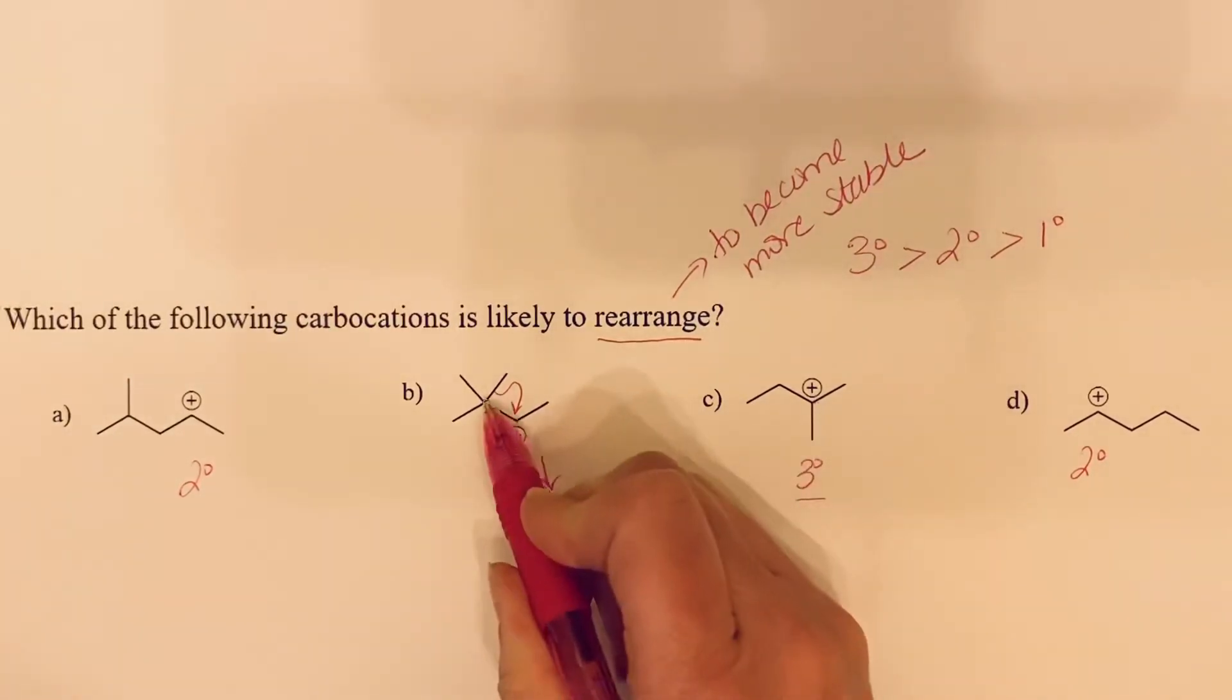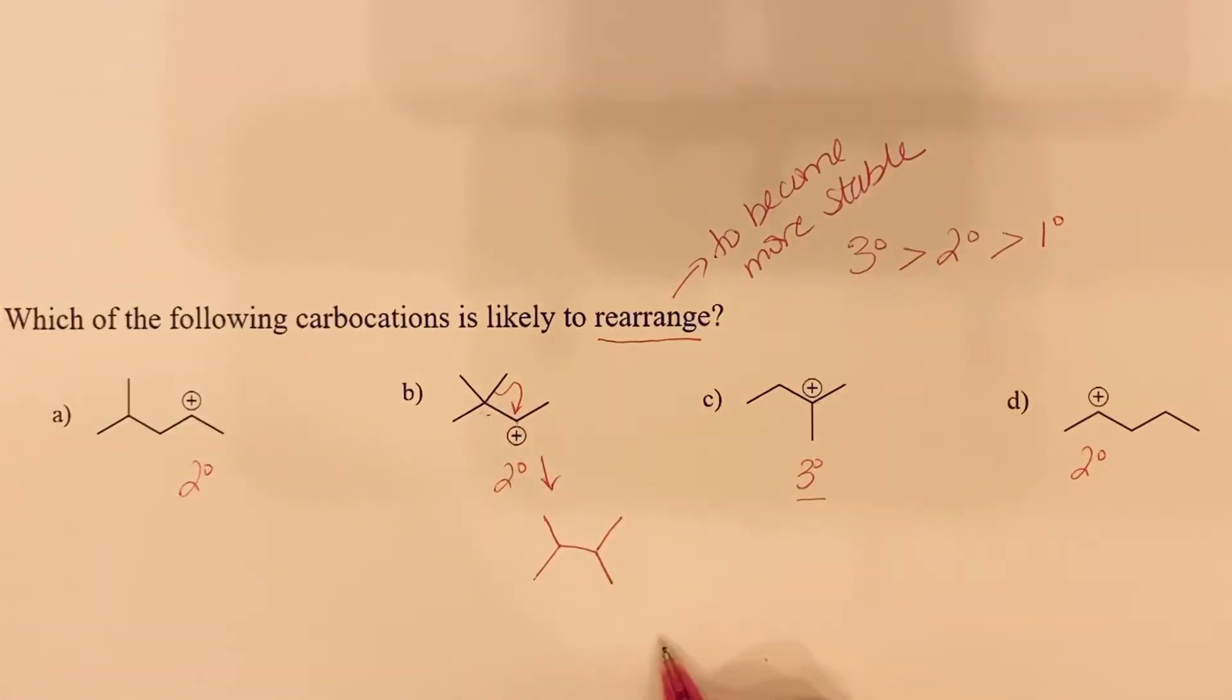In moving this bond, we're taking electrons away from this atom right here, which means our positive charge would then be here, making this a tertiary carbocation. This is our carbocation that is most likely to rearrange.